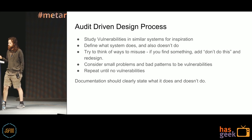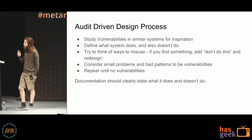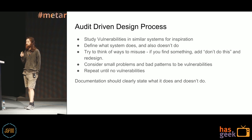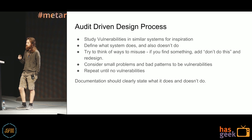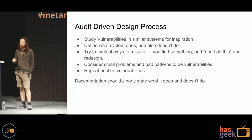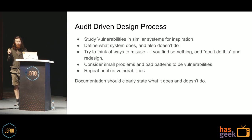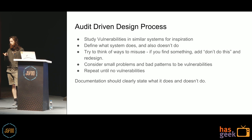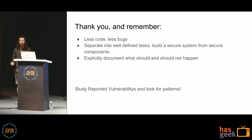Wrapping up — the audit-driven design process: study vulnerabilities and similar systems for inspiration. Define what the system does and also what it doesn't do. Try to think of ways you can misuse the system. If you find something, add 'don't do this' and go back and redesign it. Consider small problems and bad patterns to be vulnerabilities. Repeat until there are no vulnerabilities. Documentation should clearly state what it does and what you specifically designed it not to do. Remember: less code, less bugs. Separate things into well-defined components so you can build a secure system from secure parts, and explicitly document what could have happened.